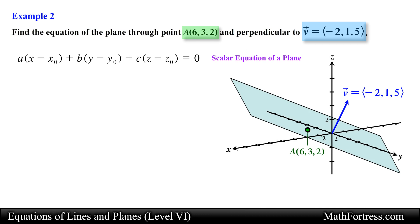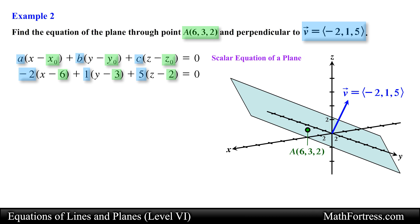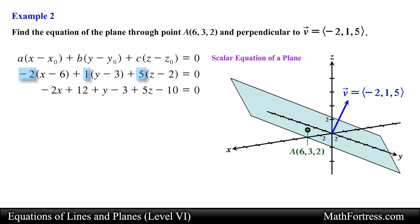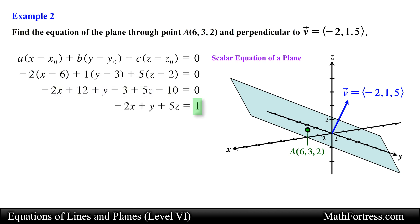Let's substitute the coordinates of point A and the components of vector V into the scalar equation of a plane. Next it is just a matter of simplifying the equation — we distribute the components of the vector and then collect like terms, moving the constant to the right side of the equation. Doing that we obtain the following equation for the plane, and this is our final answer.